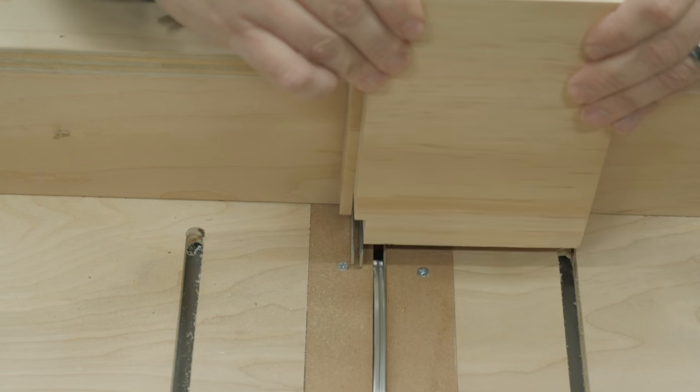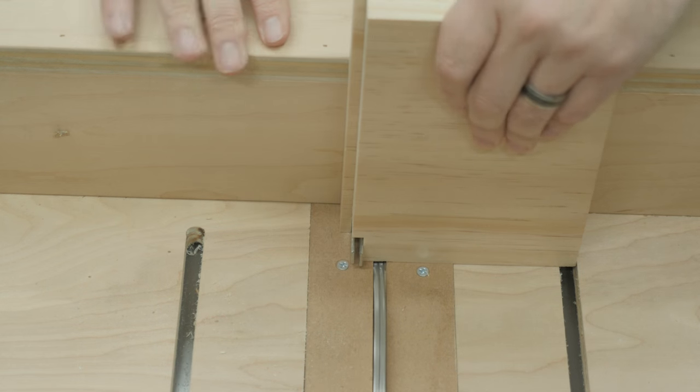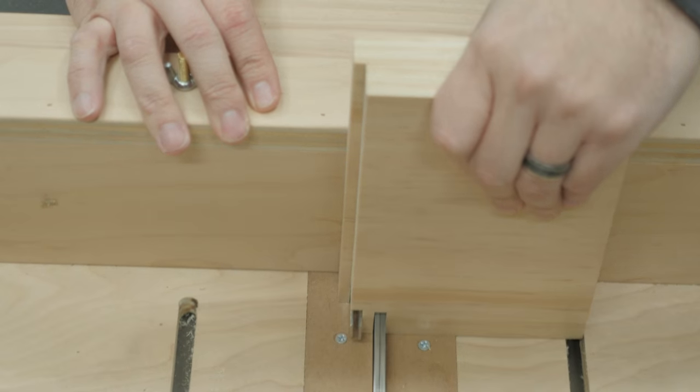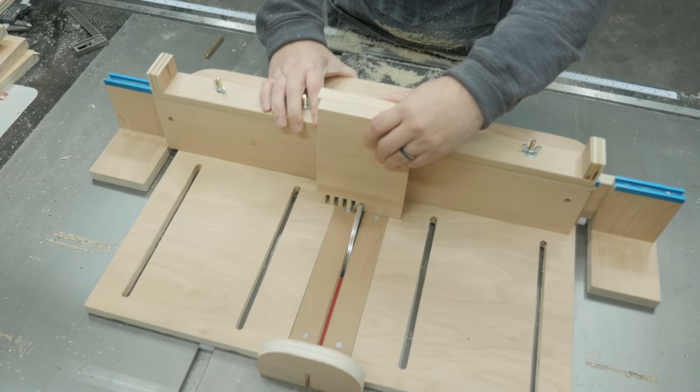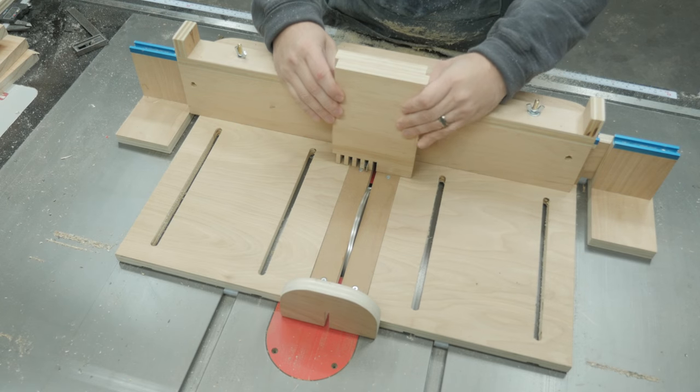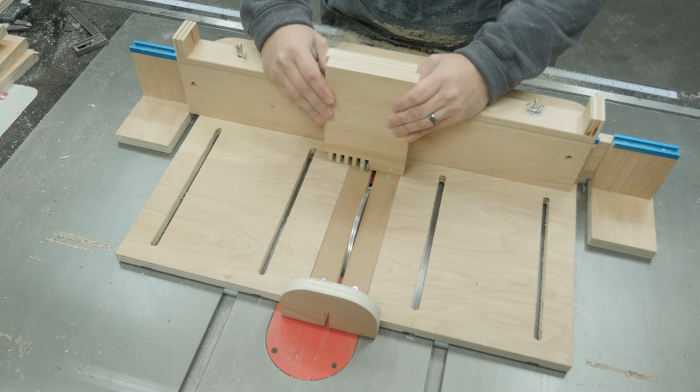Then I shift my work pieces, placing the newly formed kerf over the metal fingers for the next cut. I repeat the same process all the way across the width of the joint as the metal fingers will keep the two pieces aligned for me so I can work quickly without clamps.